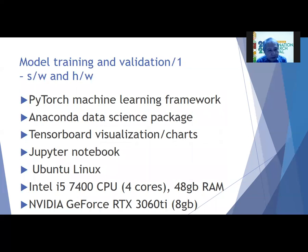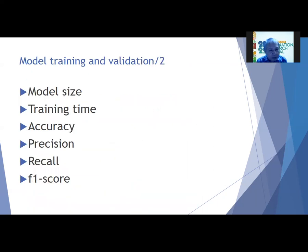For model training and validation, these are the software and hardware we used. Software includes the PyTorch Machine Learning Framework, Anaconda Data Science Package, TensorBoard Charts, and Jupyter Notebook, all running under Ubuntu Linux. Our hardware is a desktop unit with an Intel i5 CPU with 48 GB of RAM and an NVIDIA GeForce RTX 3060 Ti GPU with 8 GB of RAM. We recorded metrics such as model size, training time, accuracy, precision, recall, and F1 score.